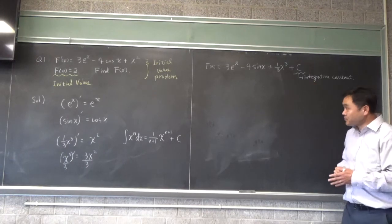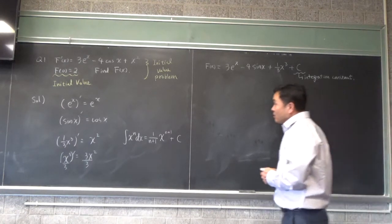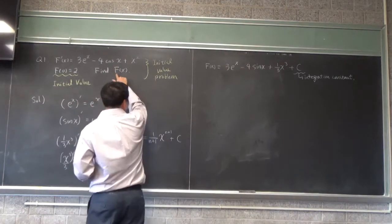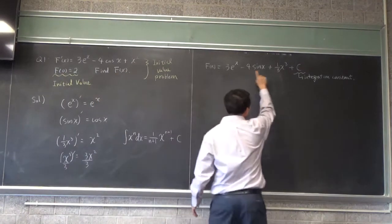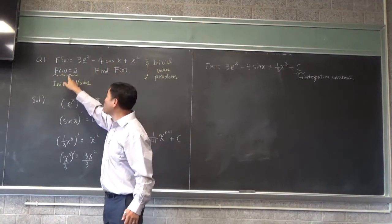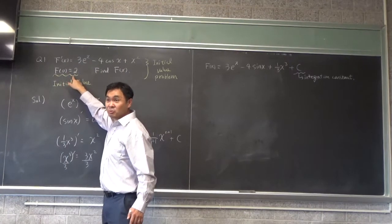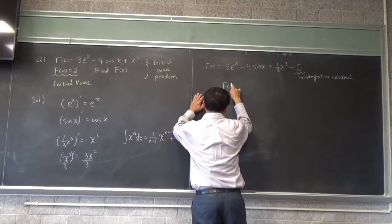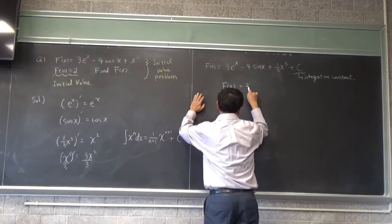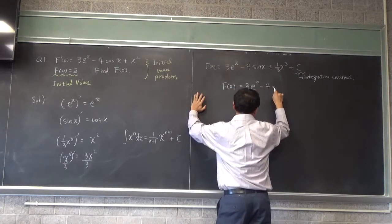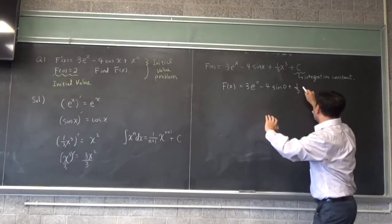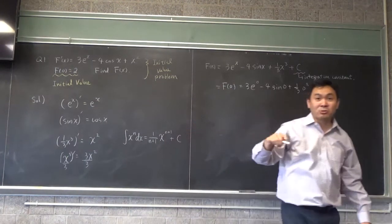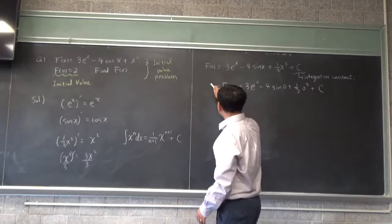We're not done yet because we have this initial value — it's an initial value problem. That's why I'm saying that this f of x is a particular solution. There are many different functions that will satisfy the first condition; however, there's only one particular one that will satisfy f of 0 equals 2. You do it by plugging 0 into x: f of 0 is 3 times e to the 0, minus 4 sine of 0, plus one-third times 0 cubed, plus c, and this has to equal 2.